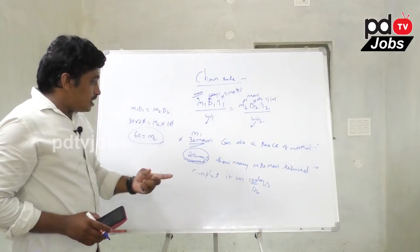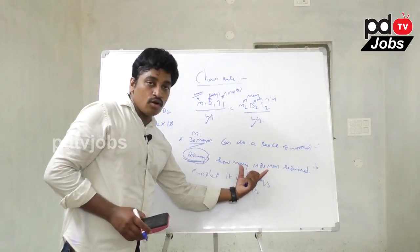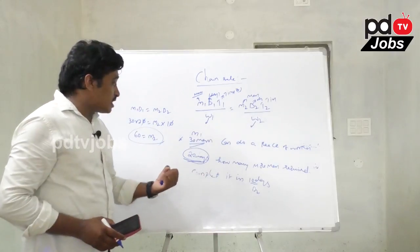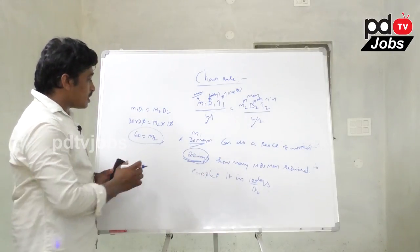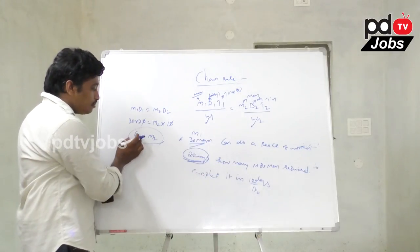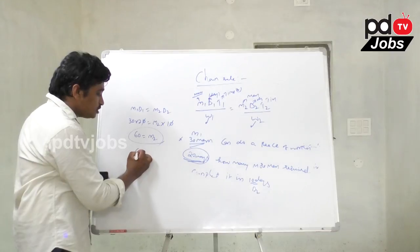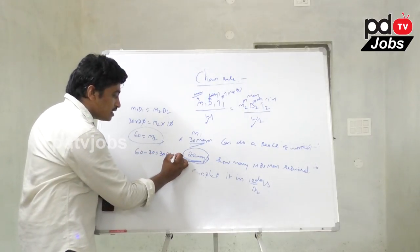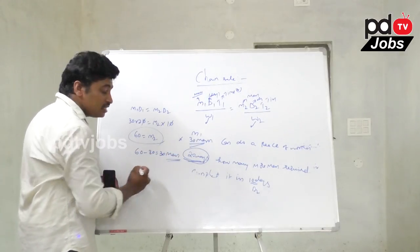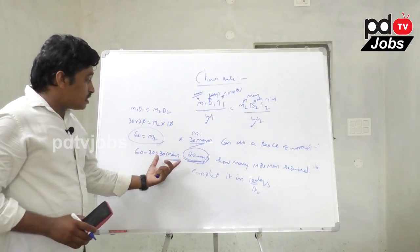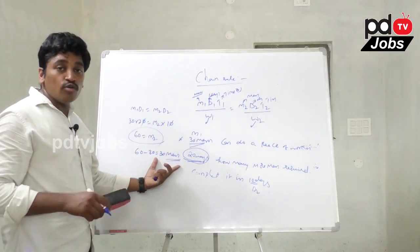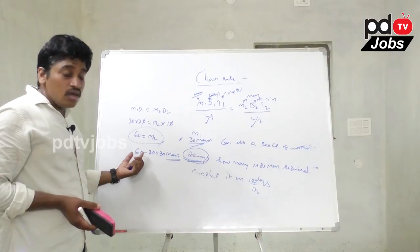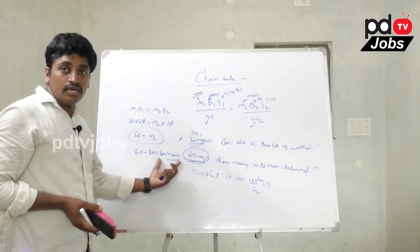But the question asks how many more men are required. Already 30 members are there. The total required is 60 men. So 60 minus 30 equals 30 more men are required.